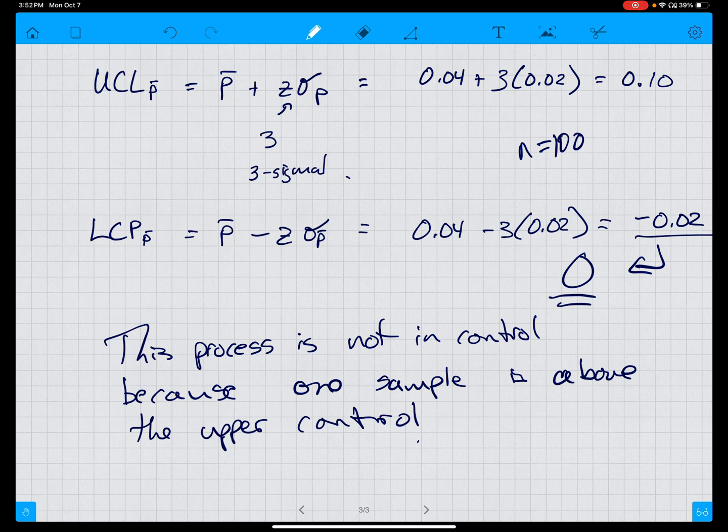So relatively straightforward. The only trick is figuring out what n is and also figuring out that we have an attribute so that we would go to a p-chart. Thanks.